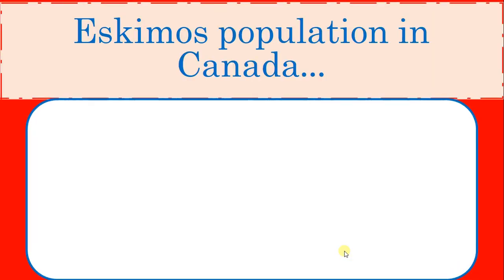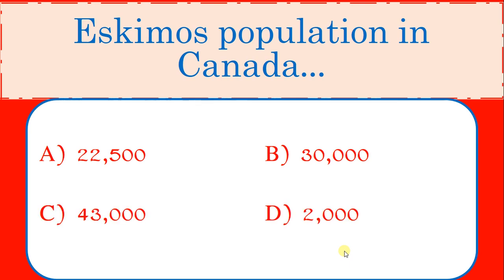Eskimos population in Canada. Options: 22,500, 30,000, 43,000, 2,000. Correct answer: 22,500.